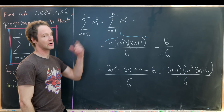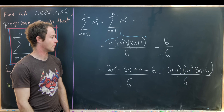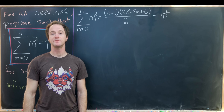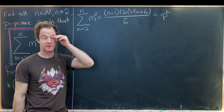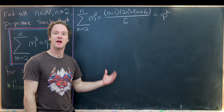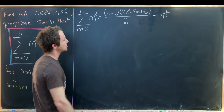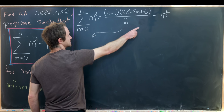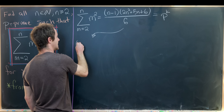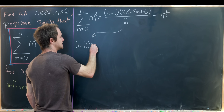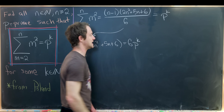We can guess and check the quadratic: it has to start with 2n² to achieve 2n³, needs +6 at the end, and in the middle +5n. So the numerator is (n − 1)(2n² + 5n + 6). To summarize, we've taken our sum and written it as (n − 1)(2n² + 5n + 6) / 6. Since our goal is for this to equal p^k, multiplying both sides by 6 gives (n − 1)(2n² + 5n + 6) = 6·p^k.